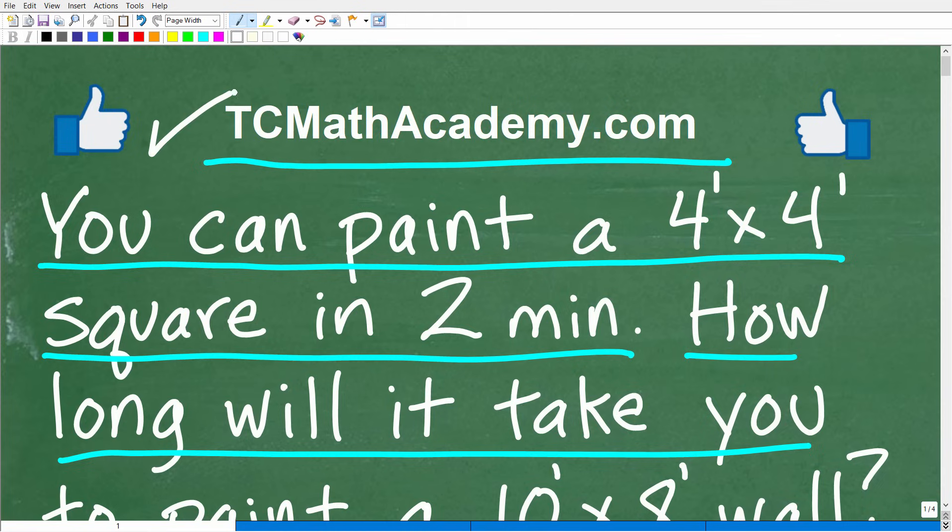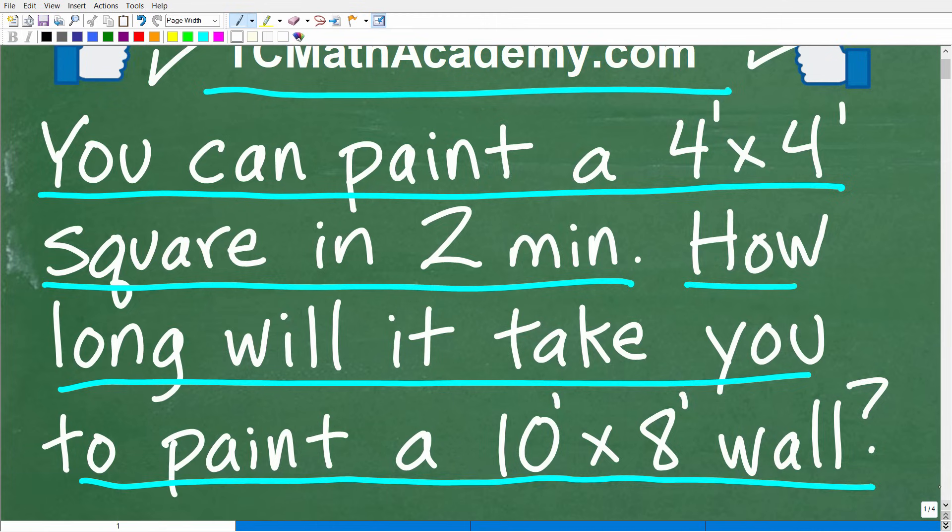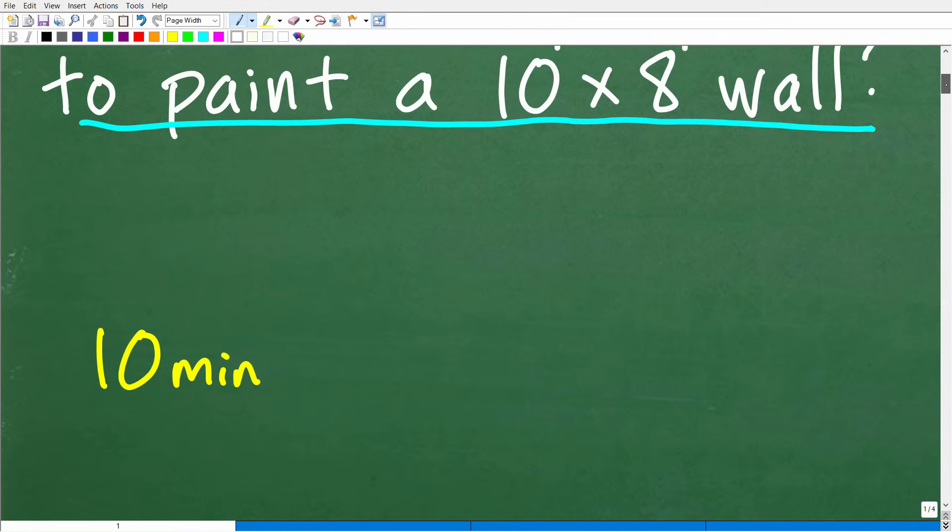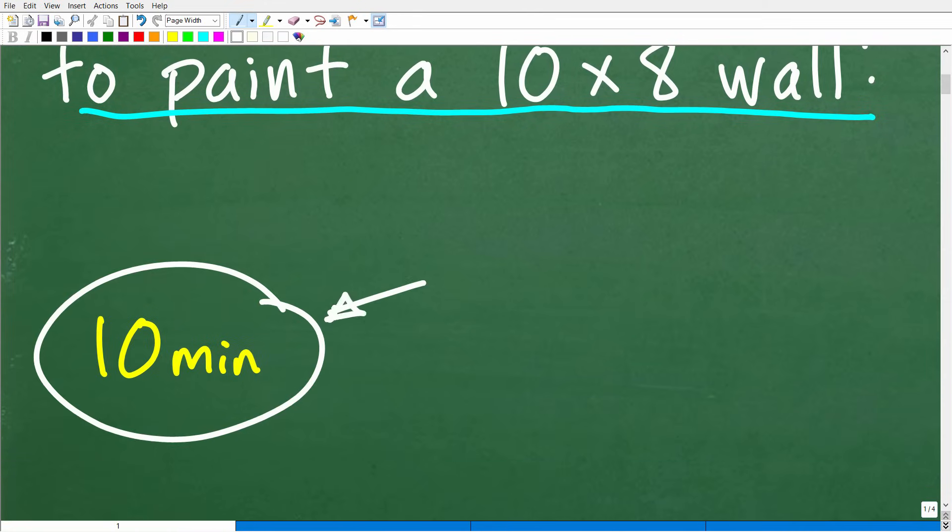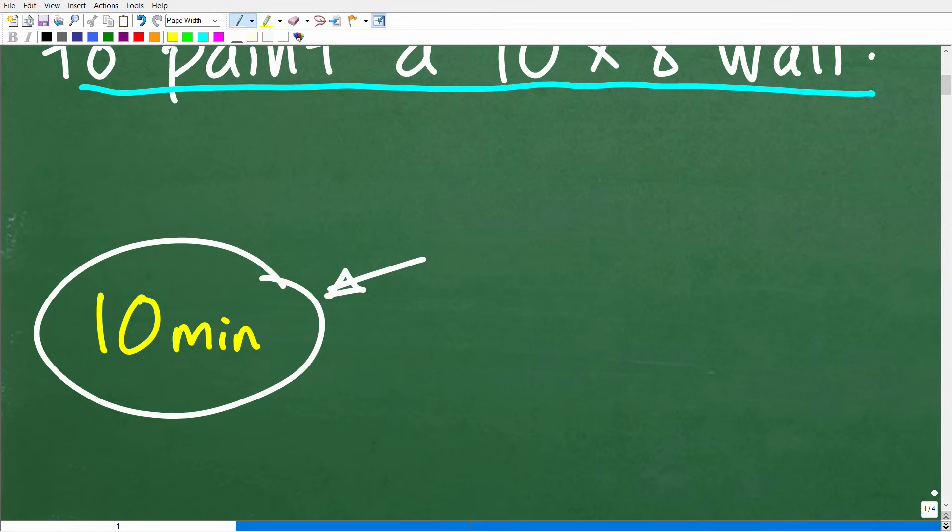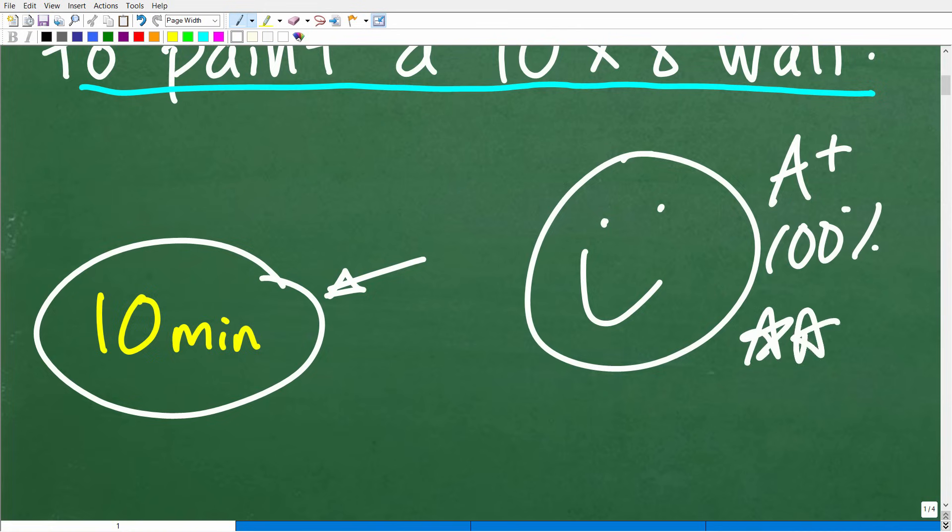And if this video helps you out, don't forget to like and subscribe. Okay, so again, we are painting a square here. We could paint this square, a 4 foot by 4 foot square, in 2 minutes. How long is it going to take us to paint this 10 foot by 8 foot wall? Well, if you did this correct, you would have come up with the answer of 10 minutes. There's different approaches that you could have taken, just even some common sense approaches to get this answer. But nevertheless, if you got the right answer, you got the right answer. And we must celebrate by giving you a nice little happy face and A plus.